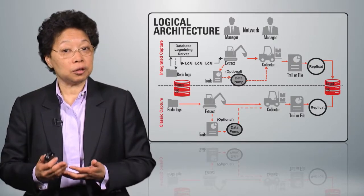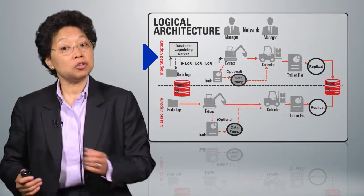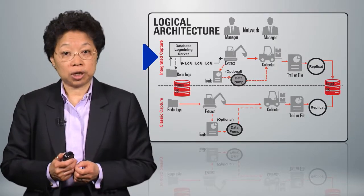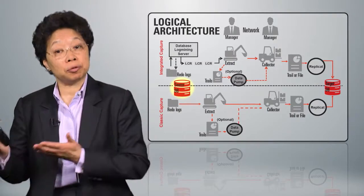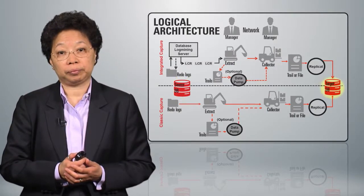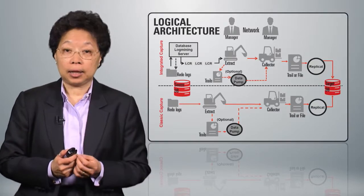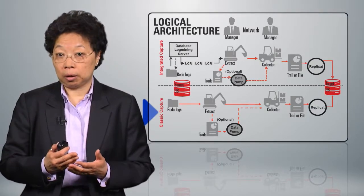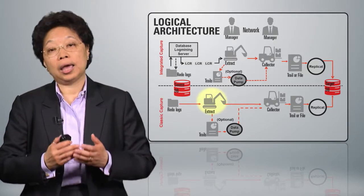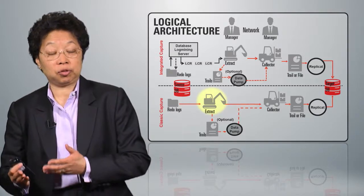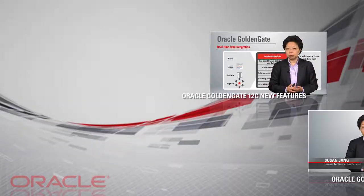Now when we take a look at the integrated capture, the concept and the function is no different. The objective is to capture the changes that were made on the source and provide those changes to the target. But if you focus on how it's captured — in the classic, my Golden Gate extract reads the transaction log and sends the information into a trail file. If I draw your attention to above the dotted line, that's where integrated capture differs.